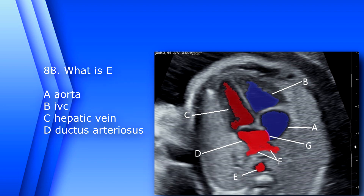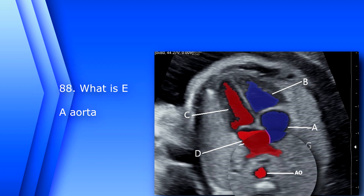Question 88. What is E? A. Aorta. B. IVC. C. Hepatic vein. D. Ductus arteriosus. The answer is A, aorta.